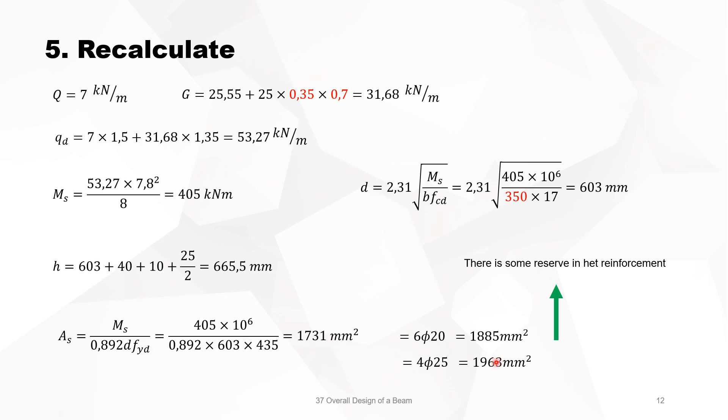But when we take the 4 diameters 25, we see we only need 1731. Even if we take diameters 20, we have still some reserve in the reinforcement. Because of this reserve, we know that this total depth that we need, maybe we can round it off downwards. We only do that because we know here there is still some reserve on the reinforcement. This difference is large enough to allow us to round it off downwards.